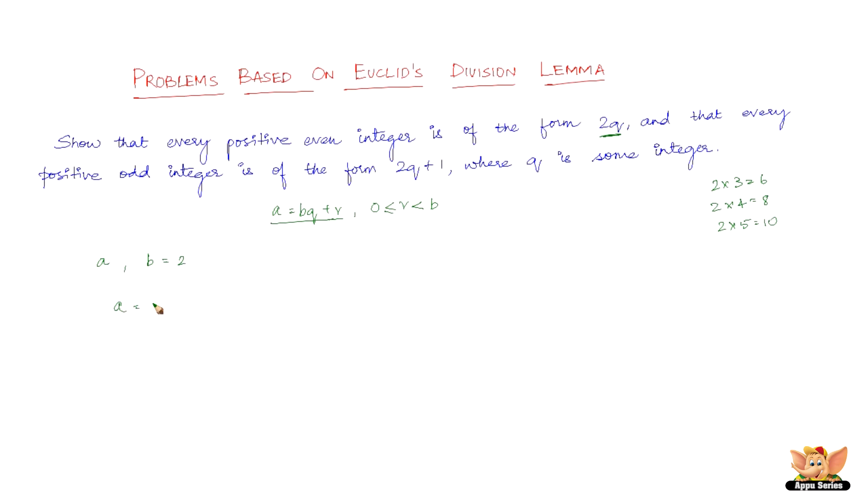So we get a equals 2q plus r, where r is going to be greater than or equal to 0 and less than 2, because 2 here is b. And that's what it says here: r should be less than b and greater than or equal to 0.